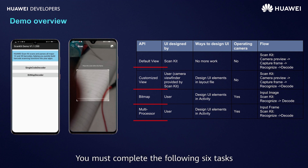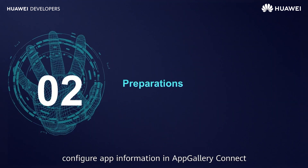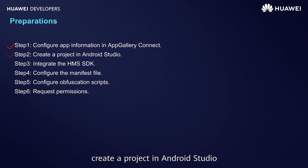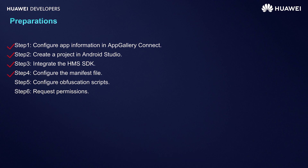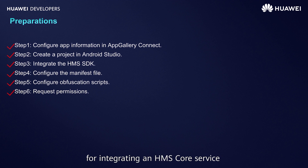You must complete the following six tasks before you can integrate ScanKit: configure app information in AppGallery Connect, create a project in Android Studio, integrate the Scan SDK, configure the manifest file, configure obfuscation scripts, and configure required permissions. These are the necessary preparations for integrating an HMS Core service into an Android app.